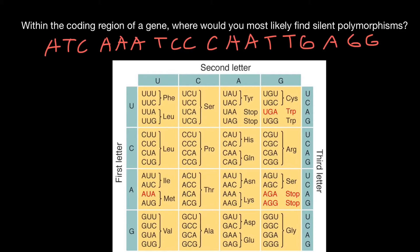But if we change this nucleotide — for example, in the third position — nothing is going to happen. We're still going to get the same protein. If we change all these nucleotides in the third position, usually this doesn't lead to a change in amino acid sequence. This is the source of the changes which we call polymorphisms — silent mutations that don't change the amino acid sequence or the sequence of the final protein or enzyme.